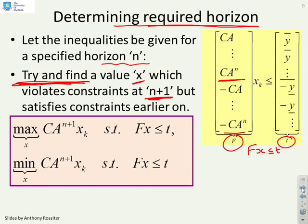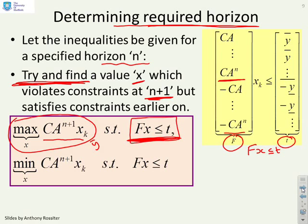Now the way I do that is some simple optimisations. You can see I maximise over x CA to the n plus 1 xk. So that's basically saying, make this number as big as I can because I want it to be bigger. My target is y bar. Can I make it bigger than y bar? But I'm going to ensure that I satisfy constraints for the first n samples, which are these inequalities here.